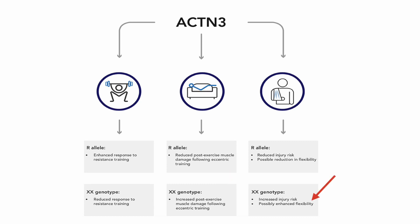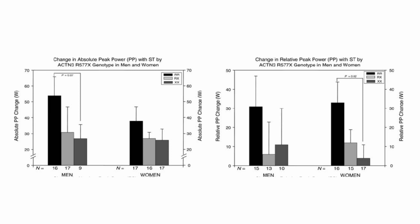For some clearer evidence illustrating this: after 10 weeks of resistance training, men and women with the RR or RX allele had greater increases in their peak power and relative power than those with the XX allele.